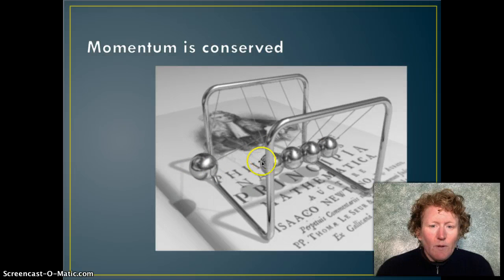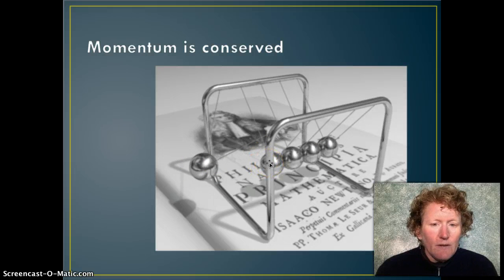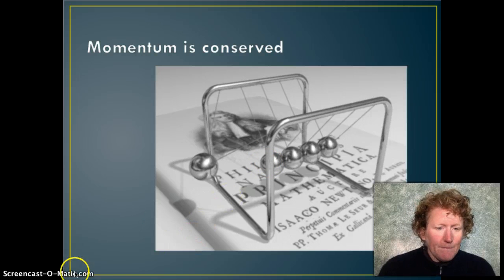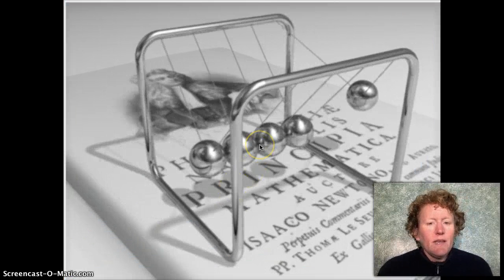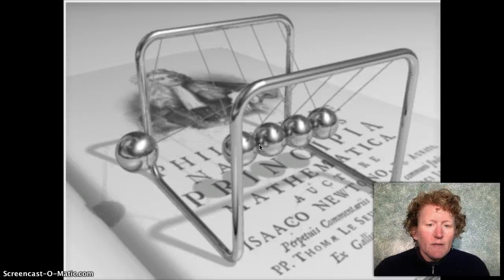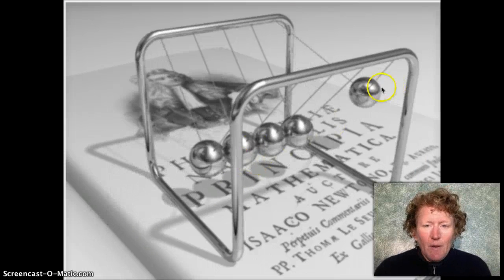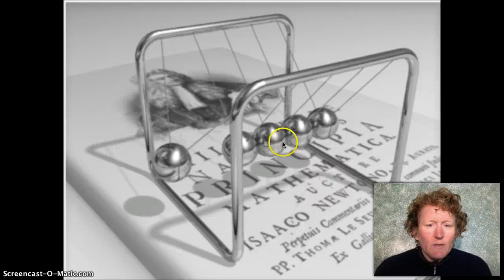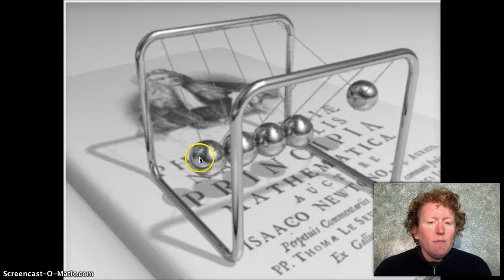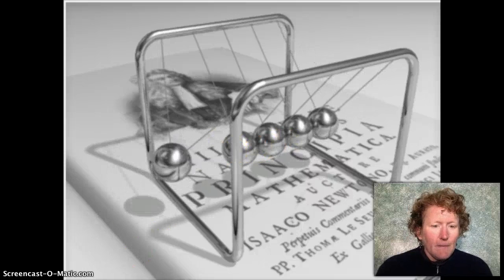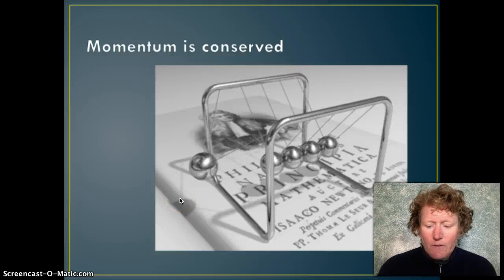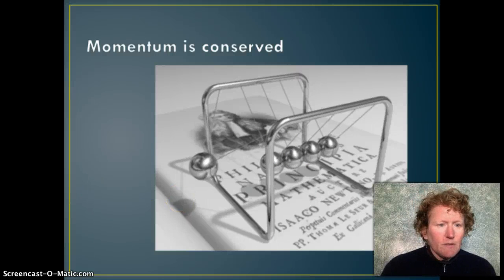If you've seen one of these Newton's cradles, you have some experience with momentum. You can see here in this animation of a Newton's cradle that momentum is conserved. The momentum of the ball that's swinging is conserved, travels through the other three balls to the ball on the opposite end. So Newton's cradle is one example where momentum is conserved.